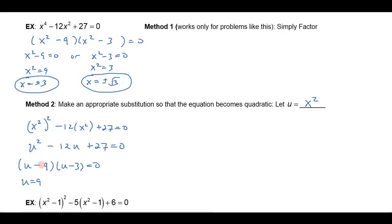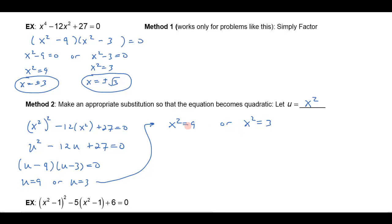So I get that u is equal to 9 for one of the solutions, or u is equal to 3 for the other. But remember, I don't want u — I want x. So I have to come back and re-substitute. u is x squared, so I really have x squared equals 9 or x squared equals 3. And there I'm back to where I can just extract the square roots: x is plus or minus 3, or x is plus or minus the square root of 3. Those four solutions.